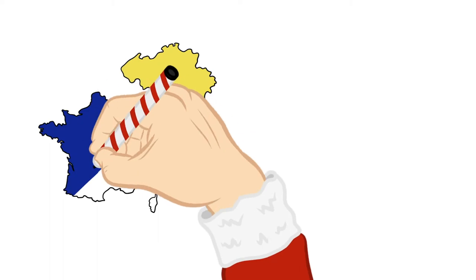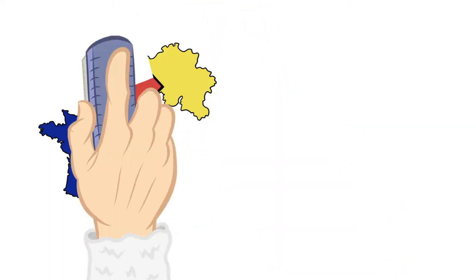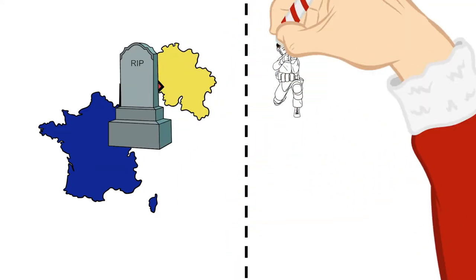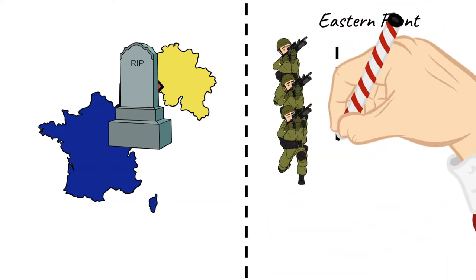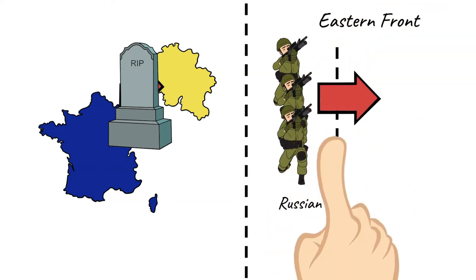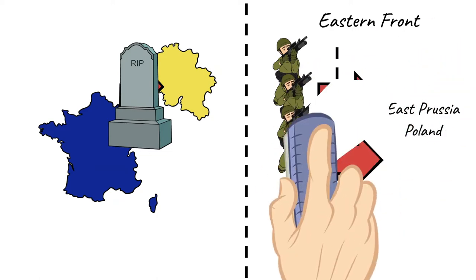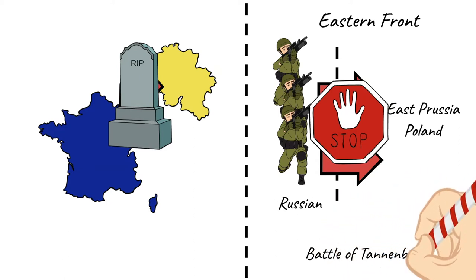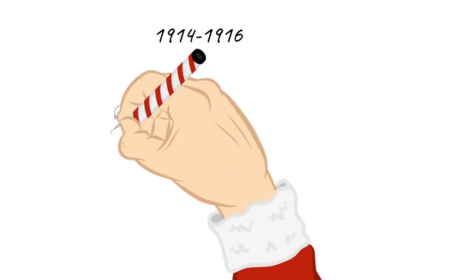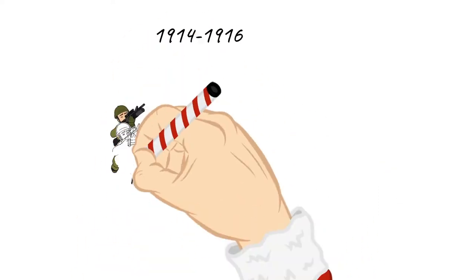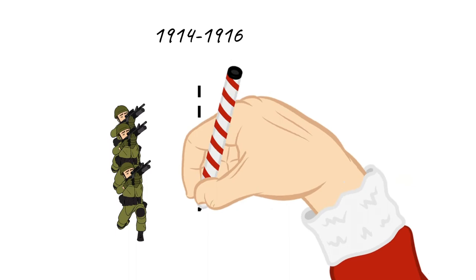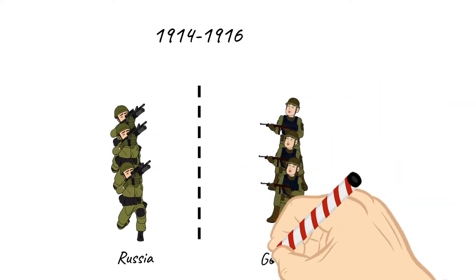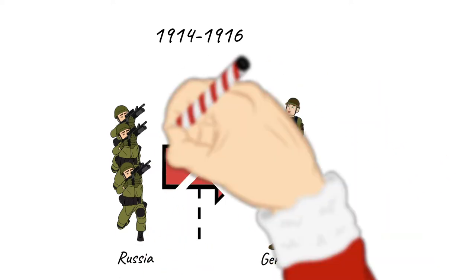The Germans left death and destruction in their wake as they advanced through Belgium toward France. On the Eastern Front of World War I, Russian forces invaded the German-held regions of East Prussia and Poland, but were stopped short by German and Austrian forces at the Battle of Tannenberg in late August 1914. From 1914 to 1916, Russia's army mounted several offensives on the Eastern Front but was ultimately unable to break through the German lines.